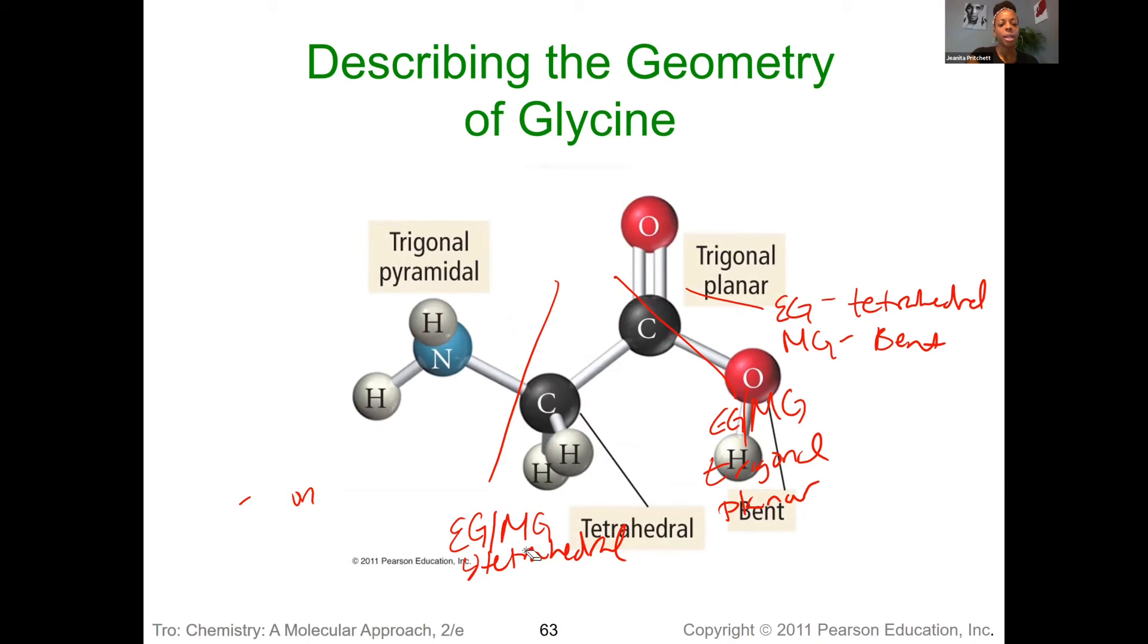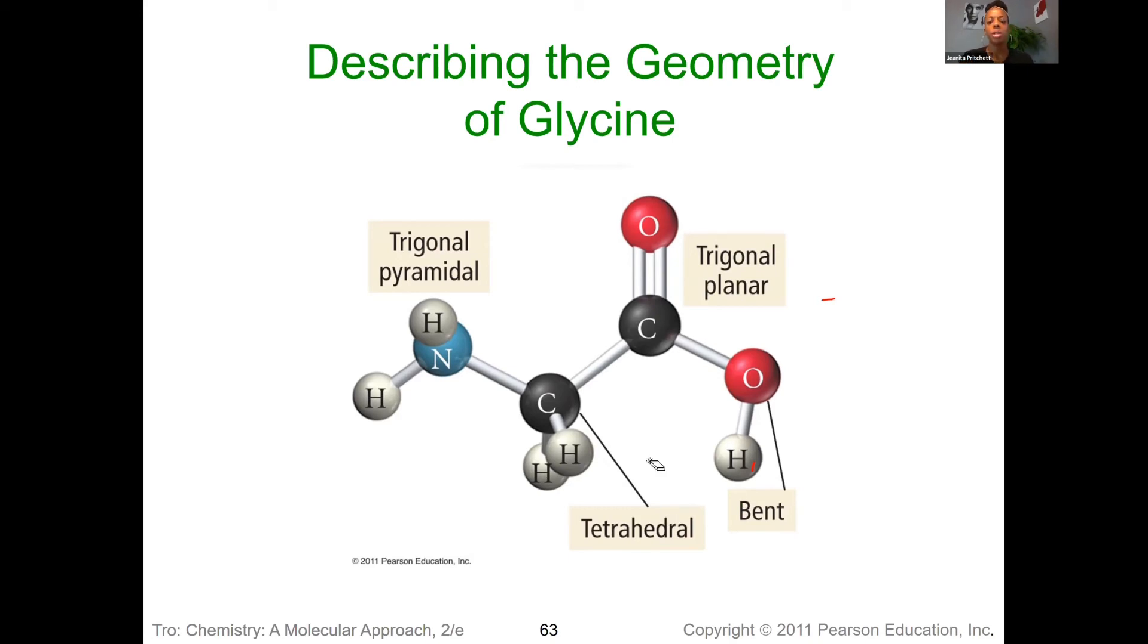And so you can see the overall shape here. We end up getting this trigonal pyramidal. Again, what we're reporting here is the molecular geometry. What does the molecule itself look like? So we have trigonal pyramidal, tetrahedral, trigonal planar, and then bent.